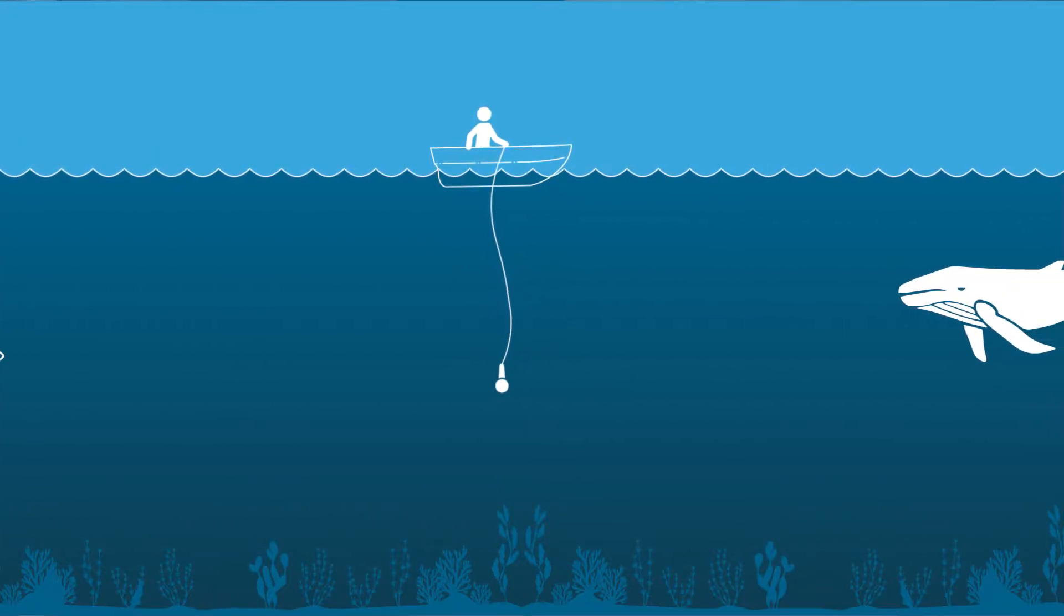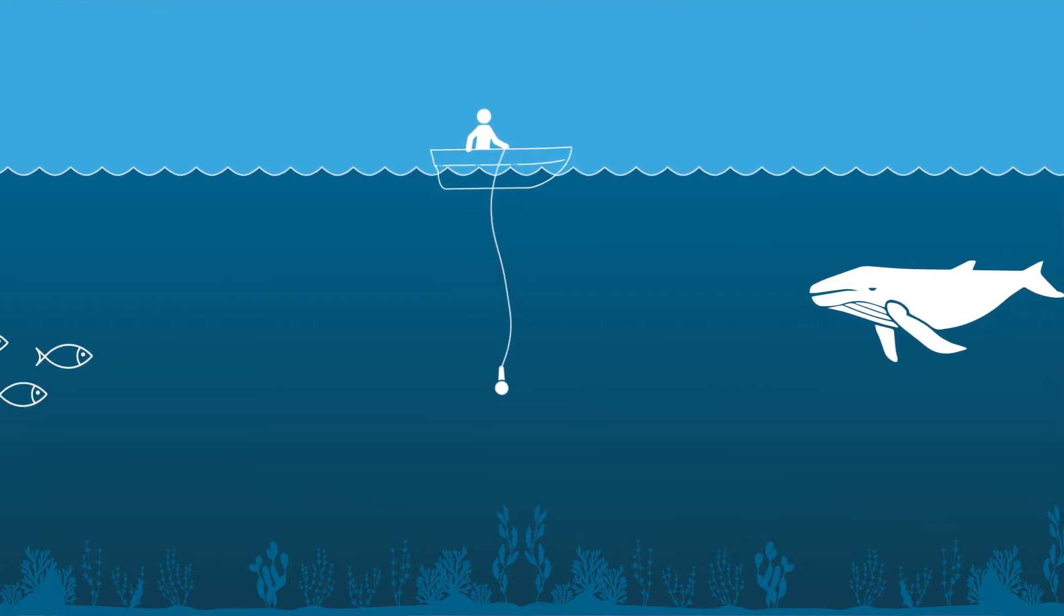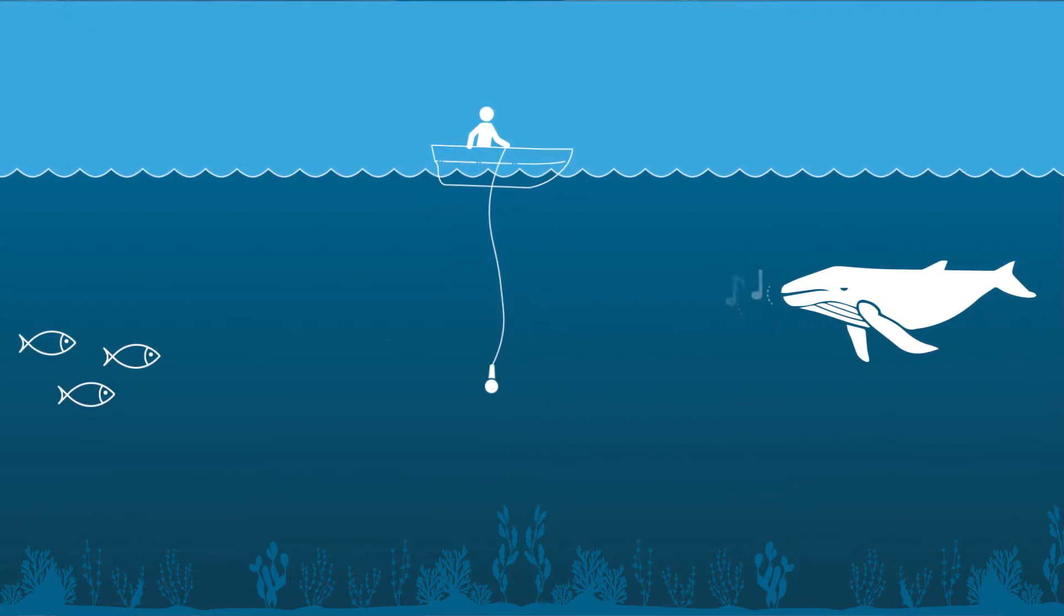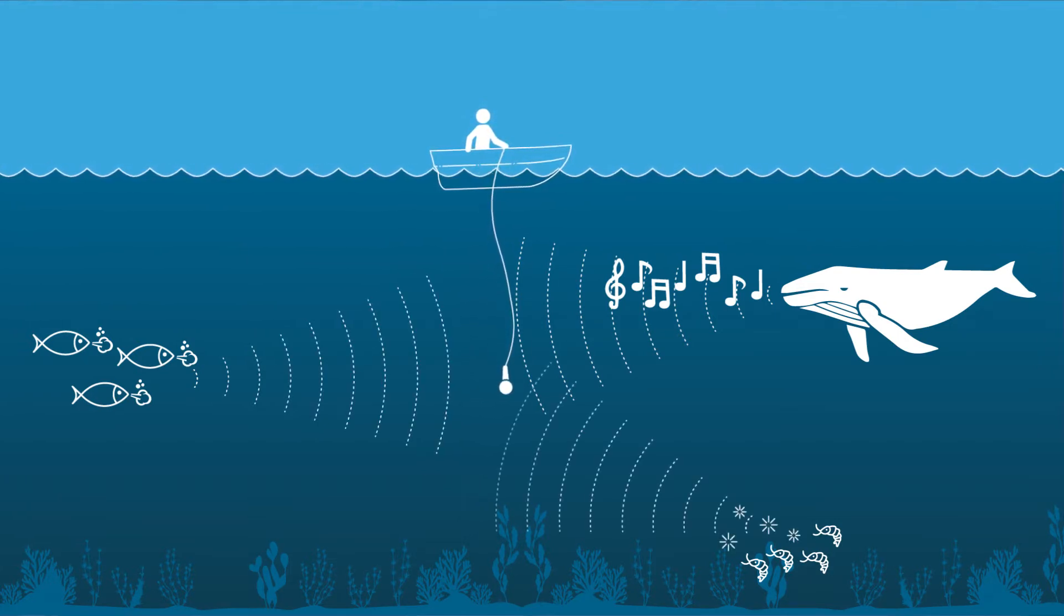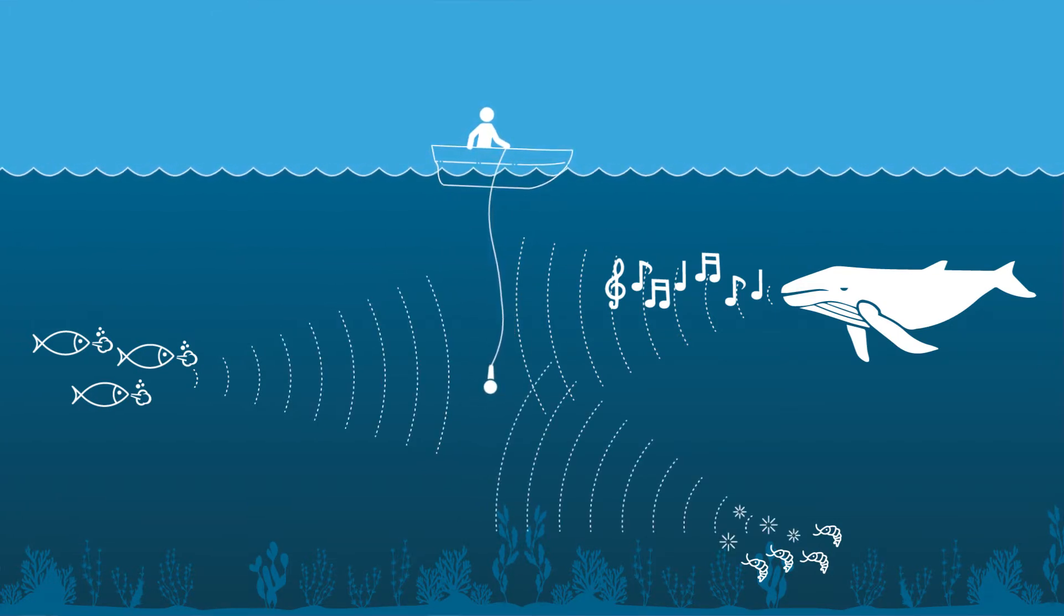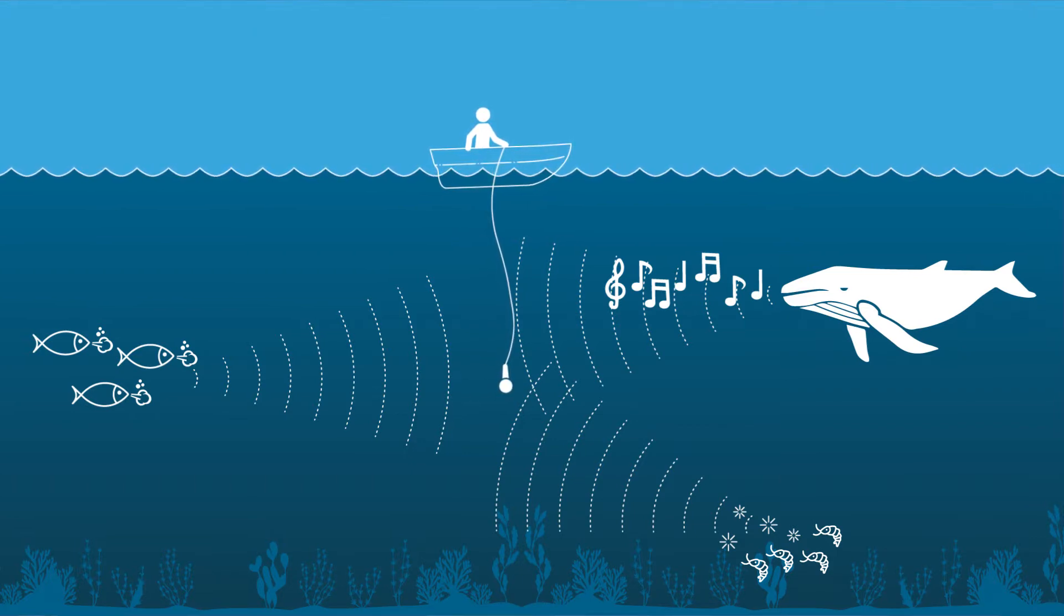Acoustics can mean all kinds of different things. Passive acoustics is when you're listening to sound that's created by animals in the ocean. People might think about whale songs or all kinds of fish and other organisms can make sound. You can listen to that and learn about what those animals are doing and where they are.